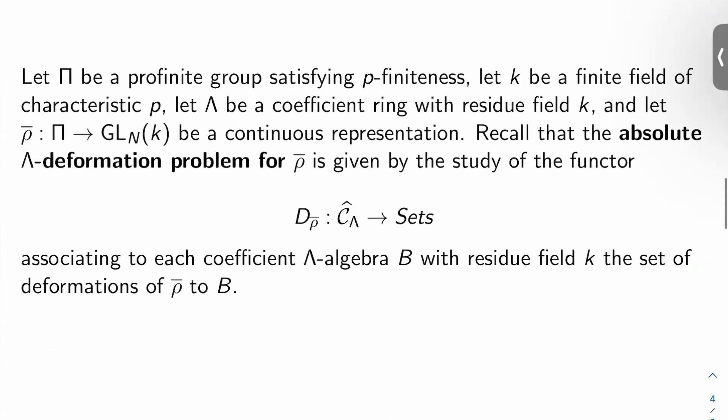Before we get into some of the main results of the chapter, let's recall some terminology. Let pi be a pro-finite group satisfying P finiteness. Let K be a finite field of characteristic P. Let lambda be a coefficient ring with residue field K. And let rho bar from pi to GLN of K be a continuous representation.